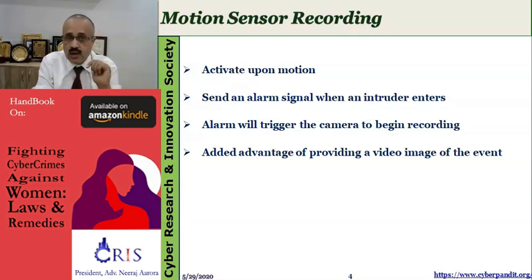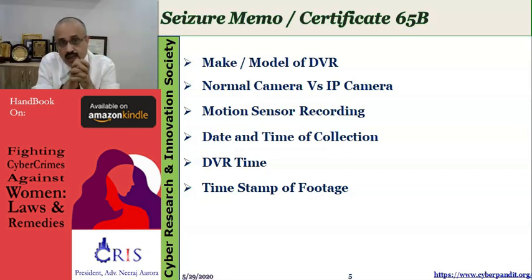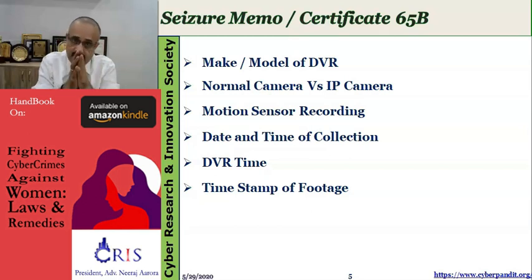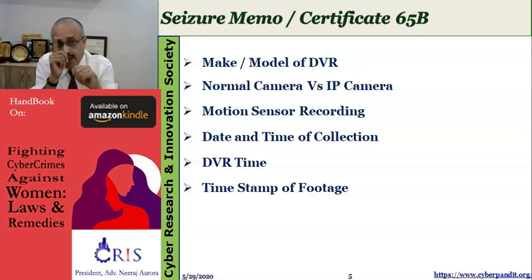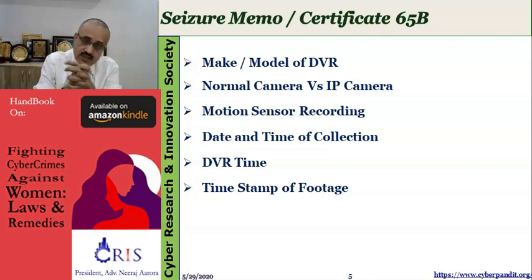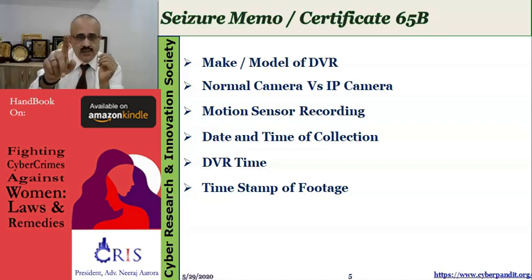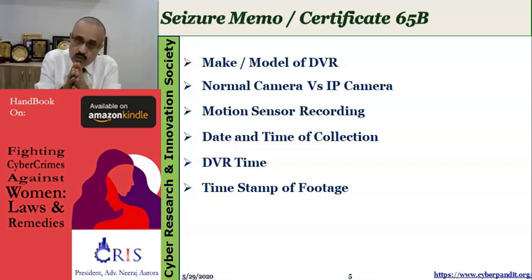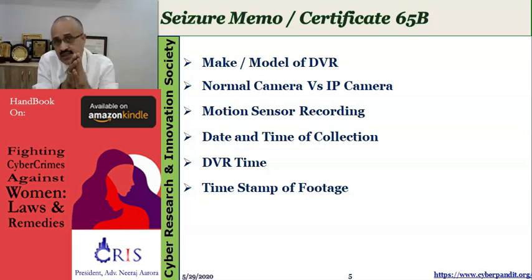Now let us discuss what should be the content of the certificate under Section 65B or the seizure memo. First, you need to mention the make and model of the DVR — the source is a primary requirement of the Section 65B certificate for both admissibility and authenticity. Second, whether the camera is a normal camera or an IP camera. During cross-examination a challenge often comes that the footage was hacked and modified, but if the camera is not an IP camera, it cannot be hacked. Third, mention the motion sensor recording as we discussed.